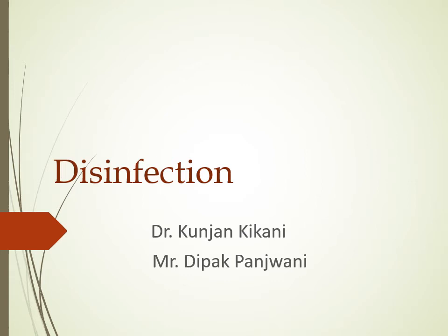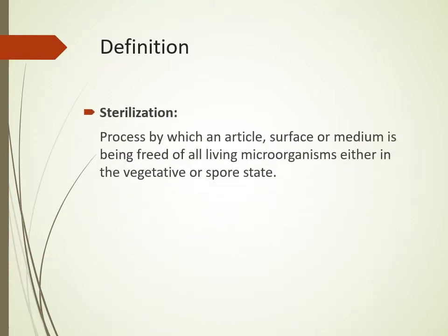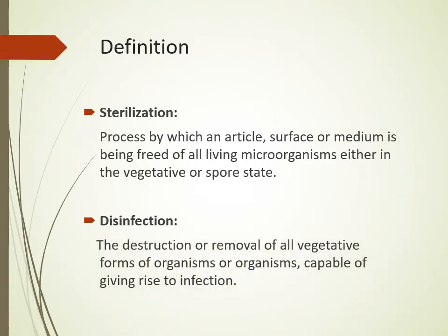Welcome to part two of sterilization and disinfection. We will revisit the definitions. Sterilization is a process by which an article, surface, or medium is freed from all living microorganisms, either in vegetative or spore form. Disinfection involves destruction or removal of all vegetative forms of organisms capable of causing infection. In sterilization, microorganisms are destroyed in both vegetative and spore forms, while in disinfection only the vegetative form is destroyed.